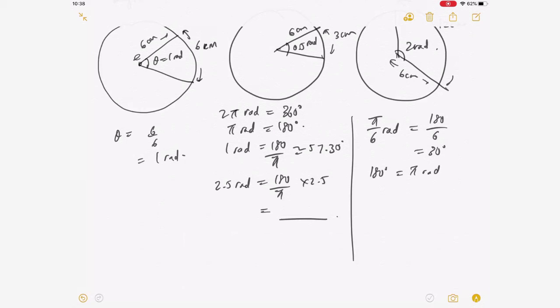So one degree is π over 180 radians. So if I want to find, for example, 45 degrees - now 45 degrees, we can actually take this and multiply. So if you simplify, it is actually π over 4 radians.